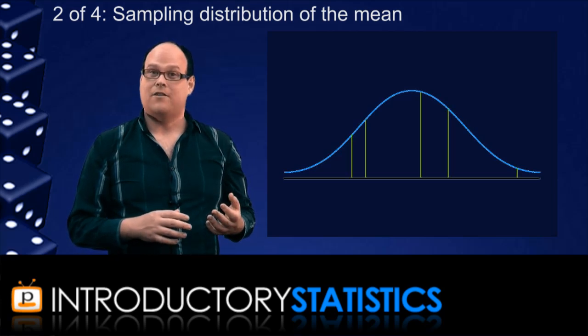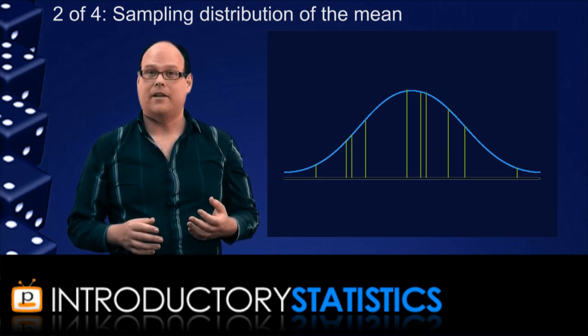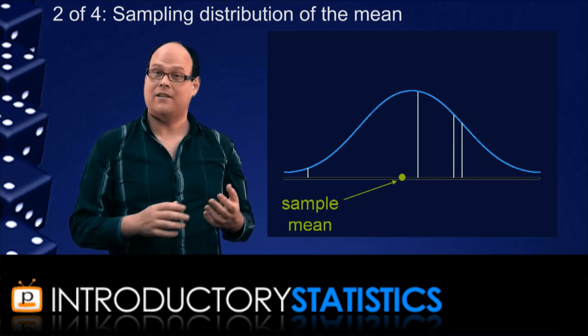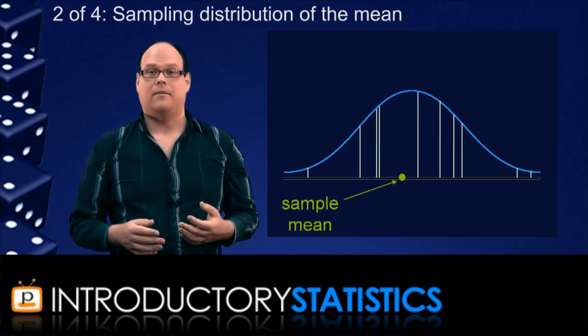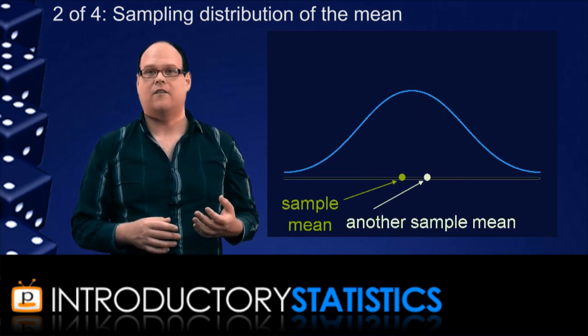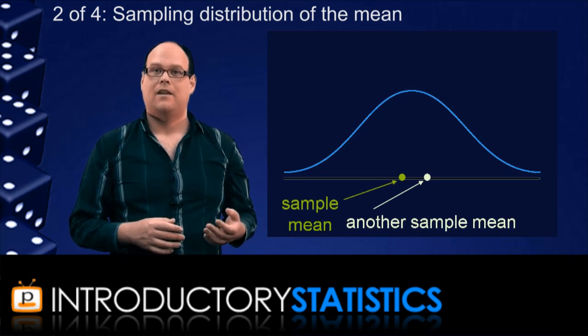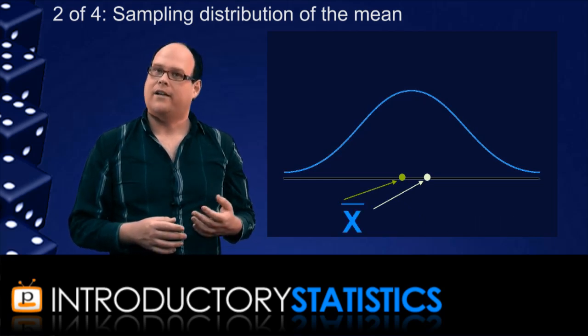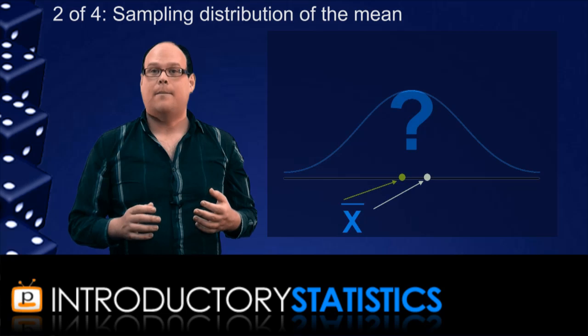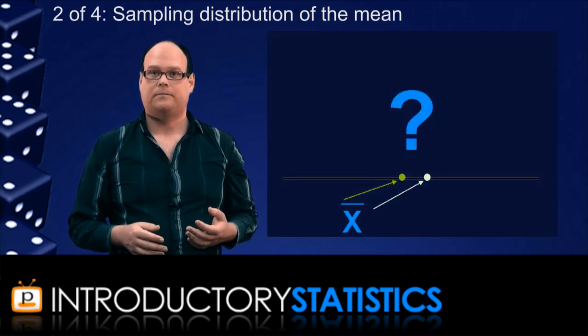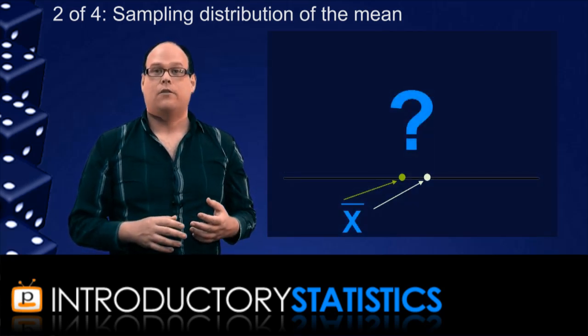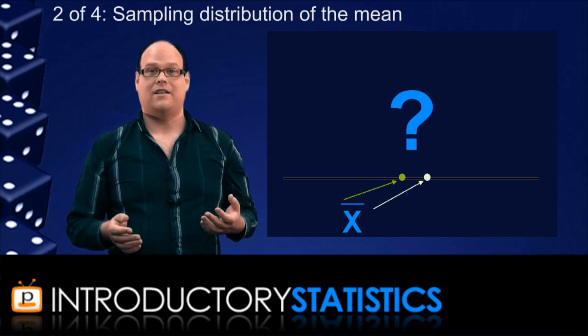We might collect a sample of values from the population and calculate a sample mean. Of course, if someone collected another sample, they would get their own sample mean. And so there is a whole set of possible sample means we could get. And this set is what we denote by X bar. And the point is, these sample means follow their own distribution. The sampling distribution of the mean.